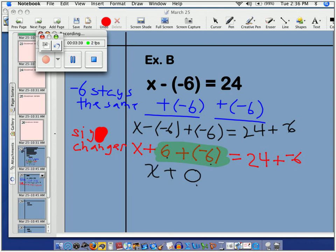So now I have x plus zero on one side of the equal, and over here I have 24 plus a negative six.